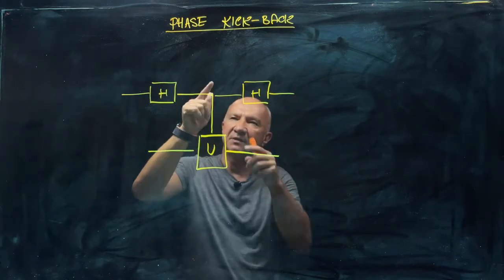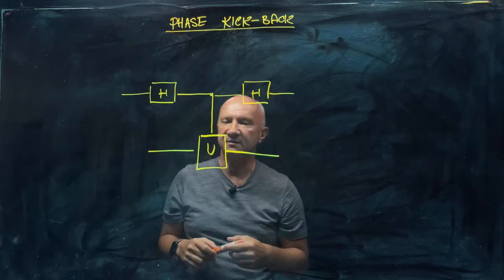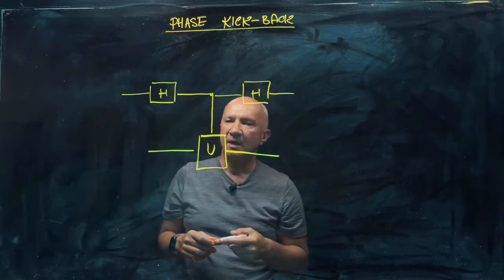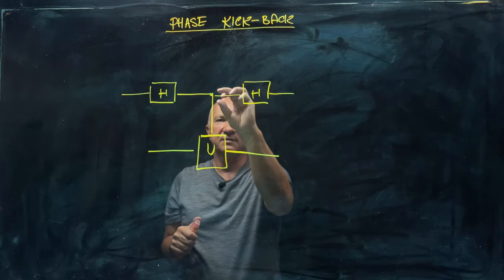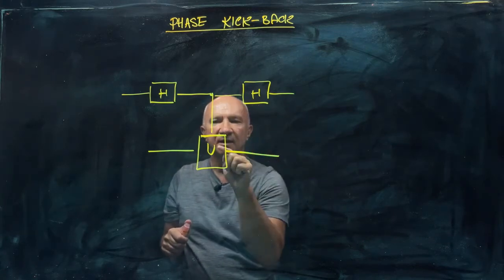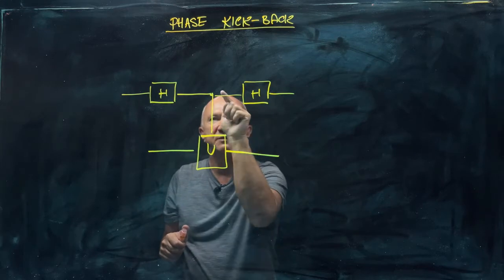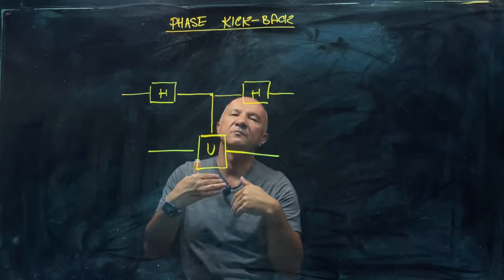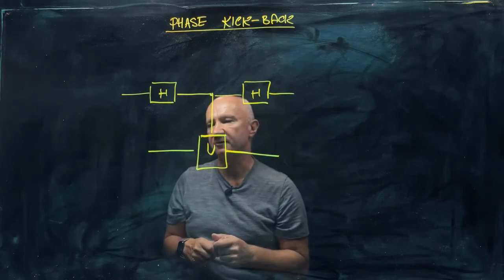But this one here is not the phase gate. It's a controlled U gate, which means that if this qubit here is in state zero, then nothing happens to the second qubit. But if this qubit here is in state one, then you apply this unitary operation U.